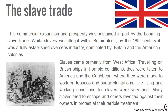Slaves came primarily from West Africa, travelling on British ships in horrible conditions. They were taken to America and the Caribbean, where they were made to work on tobacco and sugar plantations. The living and working conditions for slaves were very bad. Many slaves tried to escape, and others revolted against their owners in protest at their terrible treatment.